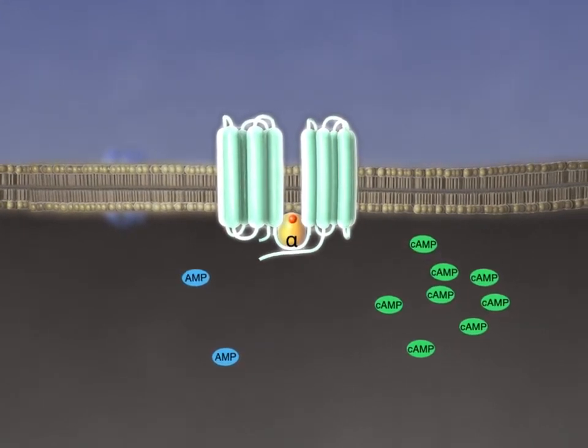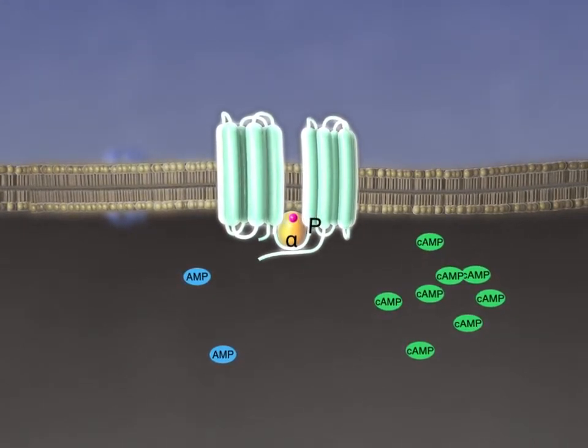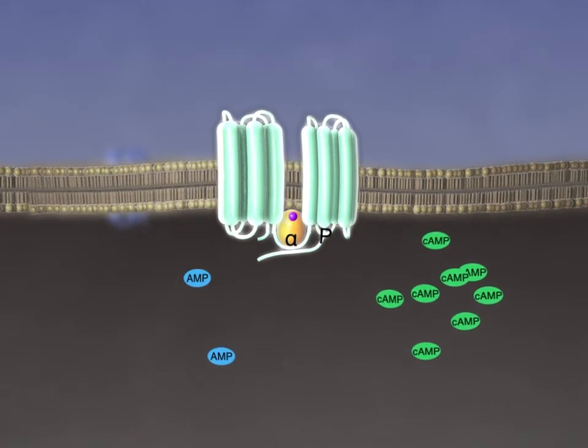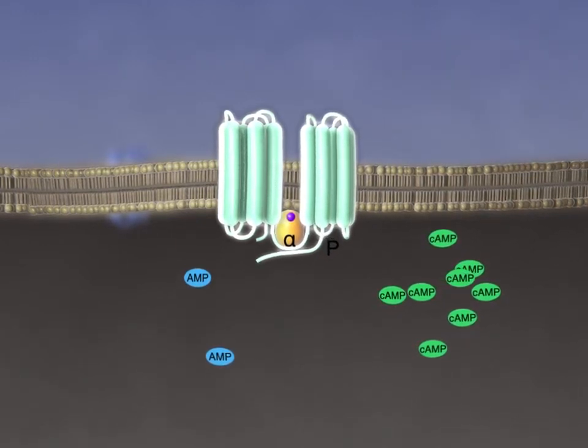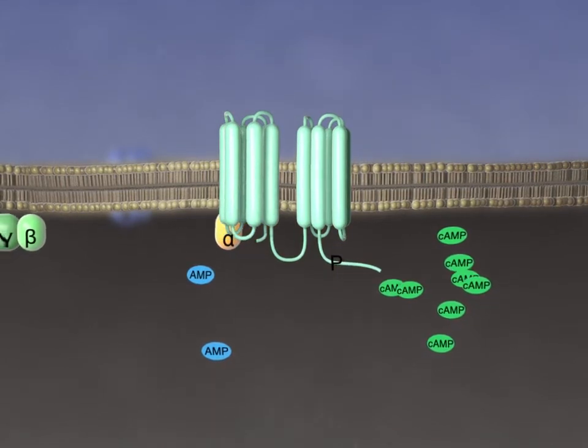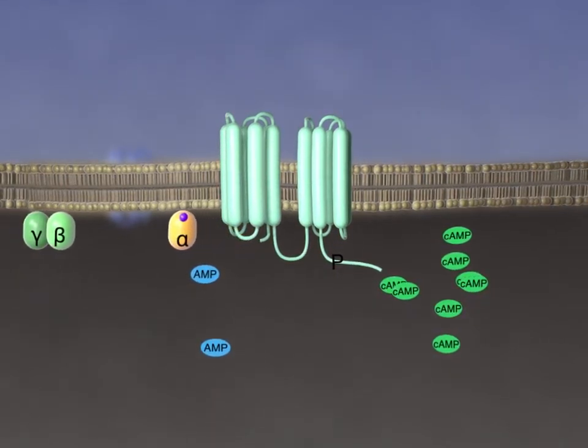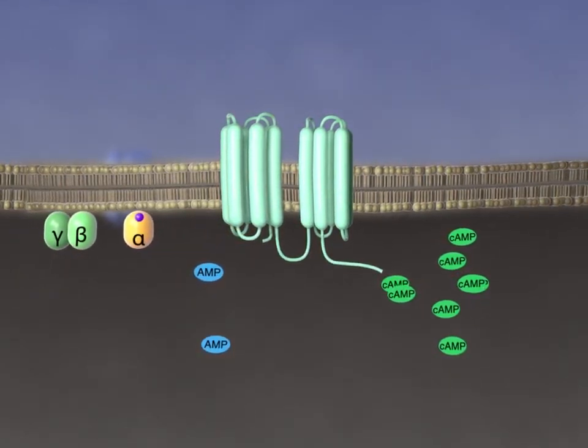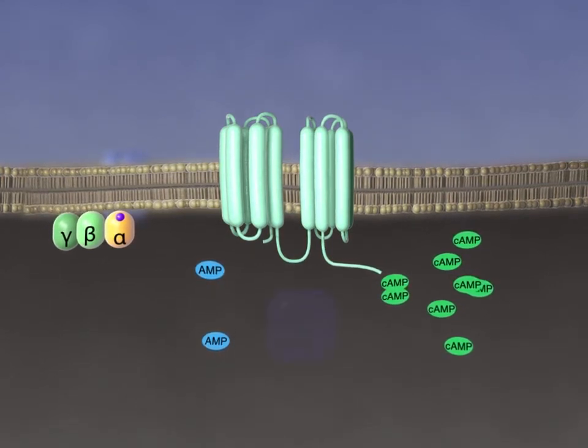Second, the G proteins hydrolyze the GTP bound to the alpha subunit, leaving GDP in its place. This causes the G protein to dissociate from adenylyl cyclase and reassociate with its beta-gamma subunits.